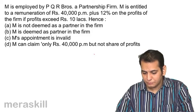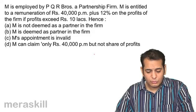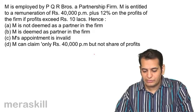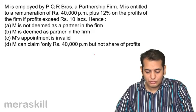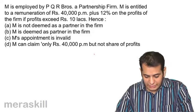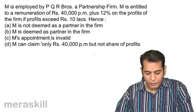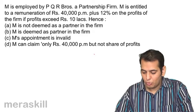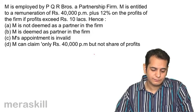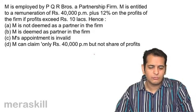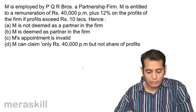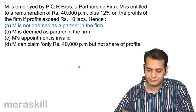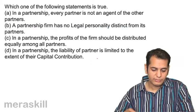Next case: M is employed by PQR Brothers, a partnership firm. M is entitled to a remuneration of 40,000 per month plus 12% on the profits of the firm if profits exceed 10 lakhs. Hence M is: a) not deemed as a partner, b) deemed as a partner, c) appointment is invalid, or d) can claim only 40,000 per month but not a share of profits. The answer is: M is not deemed as a partner in the firm.